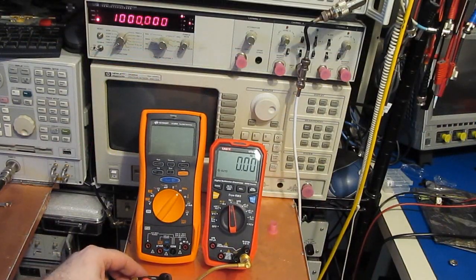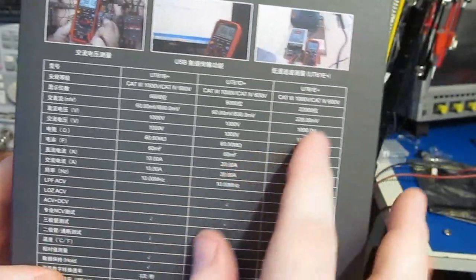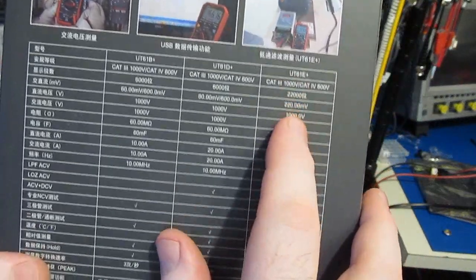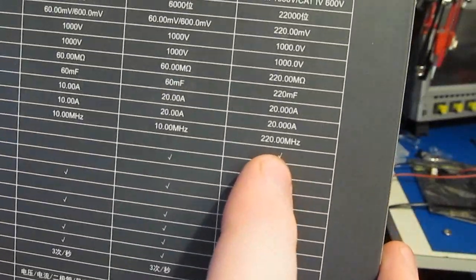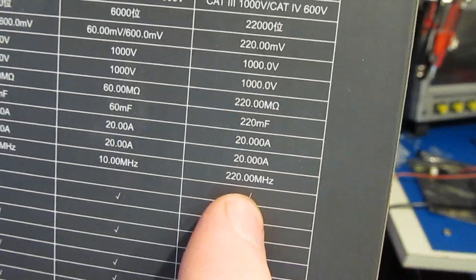On the right, this is the UniT UT61E Plus. Again, if we look at the box for this particular meter, this is the UT61E Plus. I assume this means frequency counter in Hertz, and we can see that they've rated this all the way up to 220 megahertz.